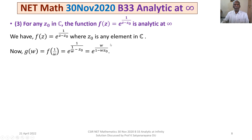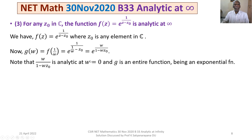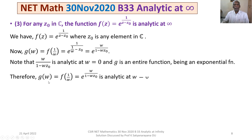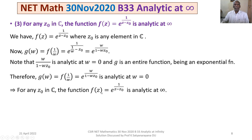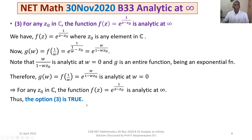We observe that w/(1−wz₀) is analytic at w = 0. And g is an exponential function, therefore it is an entire function. Composing these two things, g(w) is analytic at w = 0. Therefore f(z) = e^(1/(z−z₀)), where z₀ is any element in C, is analytic at infinity. Thus option 3 is true.